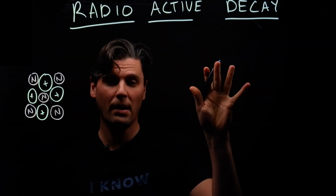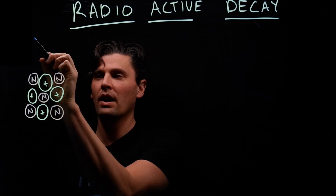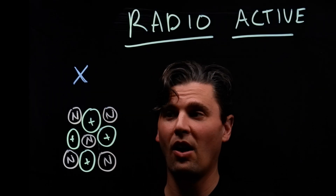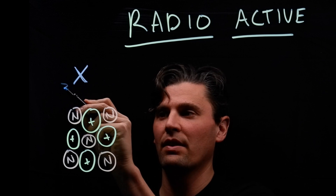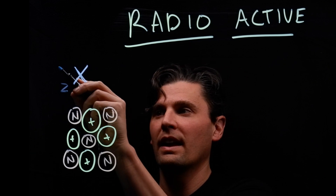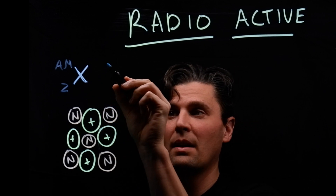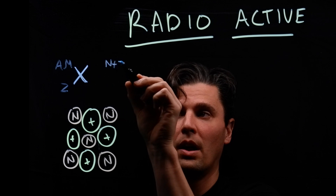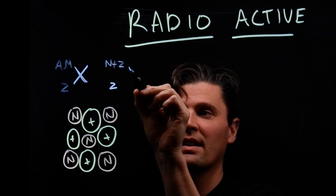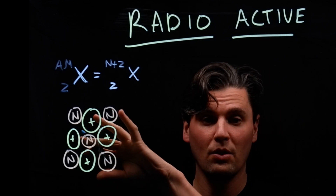First, we're going to talk about the terminology and notation we use. For a given element X, that element has a given number of protons — we call that the atomic number Z. Then it has the atomic mass, which is the number of neutrons plus the number of protons. The atomic number is the number of protons.